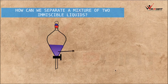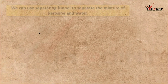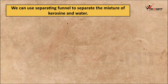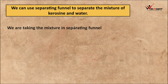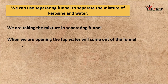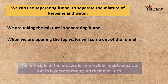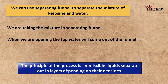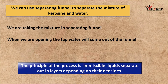That is the use of the separating funnel — now only kerosene remains. We can use a separating funnel to separate the mixture of kerosene and water because these are immiscible liquids. The principle of this process is that immiscible liquids separate out in layers depending on their density. In this case, the density of kerosene is less than the density of water, so it floats on the surface of water.